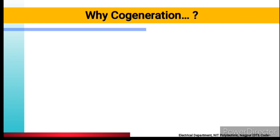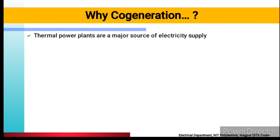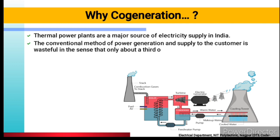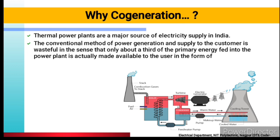Why co-generation? Why is it important? What is the need of co-generation? Thermal power plants are the major source of electricity supply in India. We all know that thermal power plants are very important for electricity generation — at least 35% of electricity is generated because of coal plants. In the conventional method, power generation and supply to the customer is wasteful in the sense that only one third of the primary energy fed into the power plant is actually made available to the user.